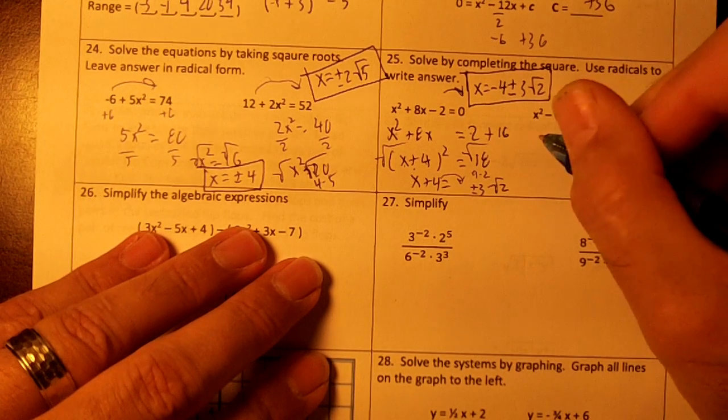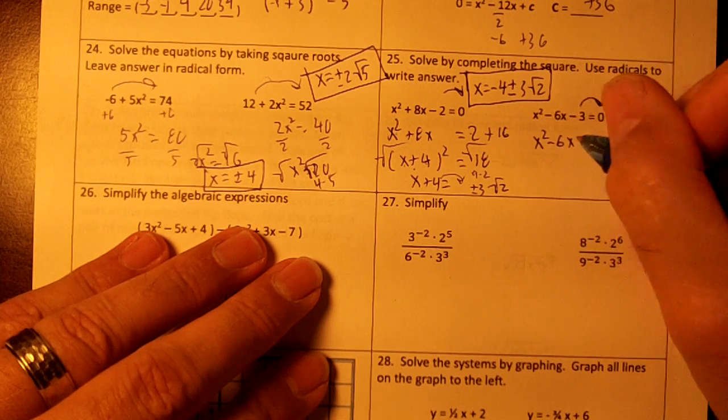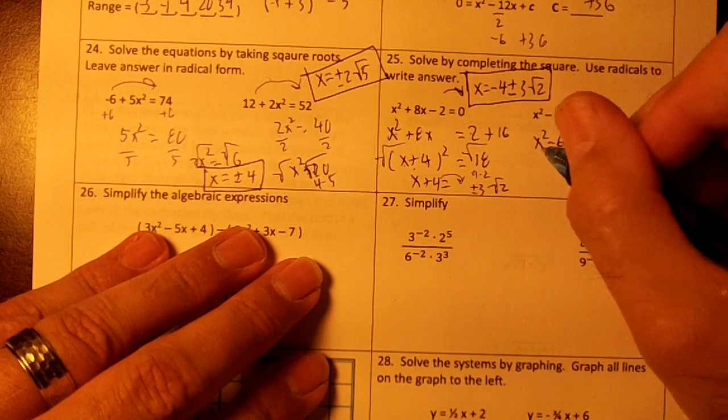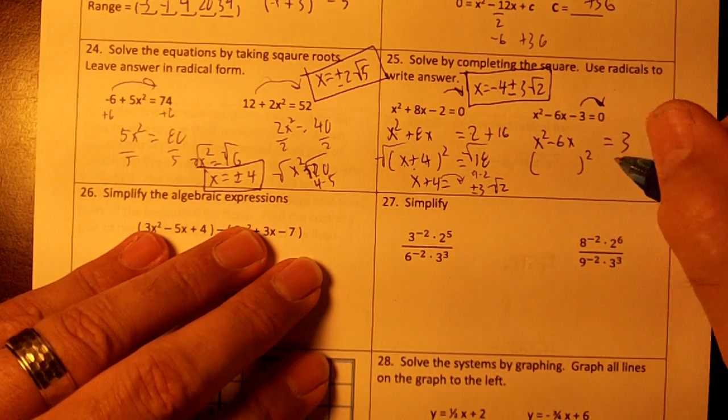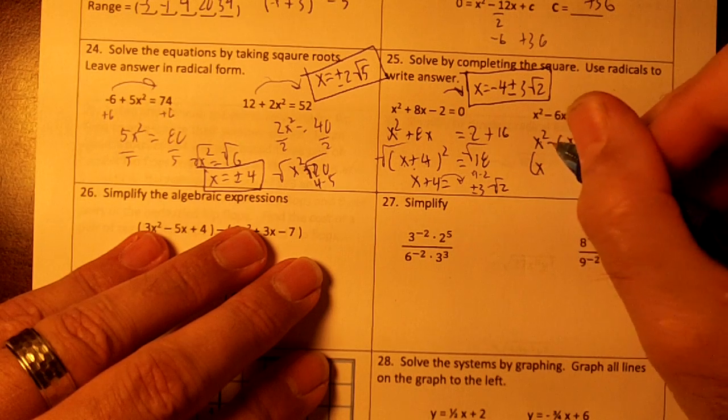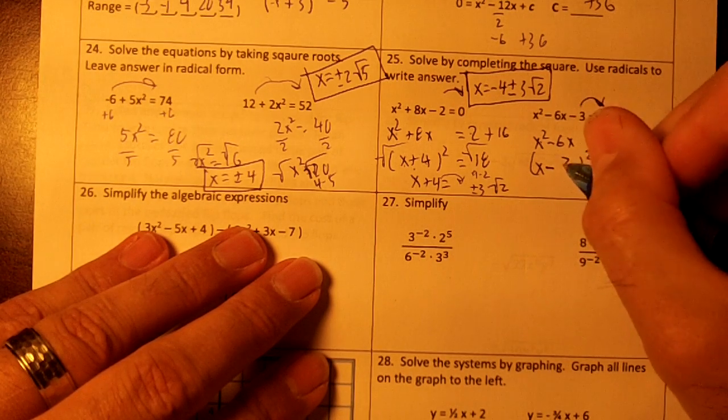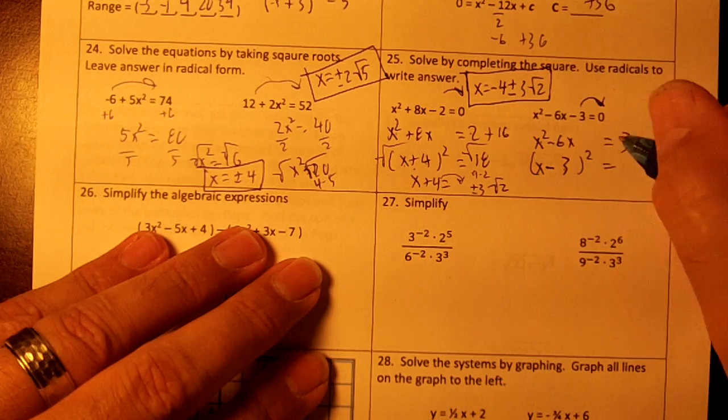Okay, right here, let's move over the 3. x² minus 6x equals 3. Draw your parentheses right here and square it. Write down your x, drop your minus. 6 divided by 2 is 3. 3 squared is 9.